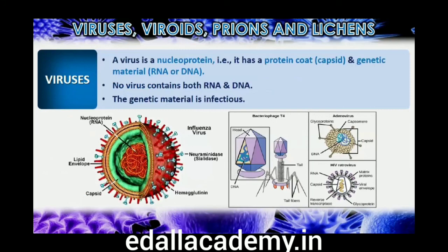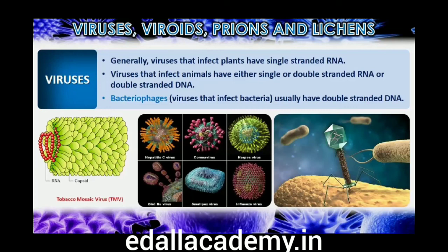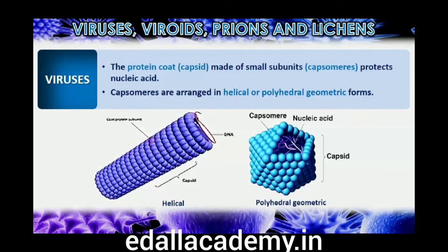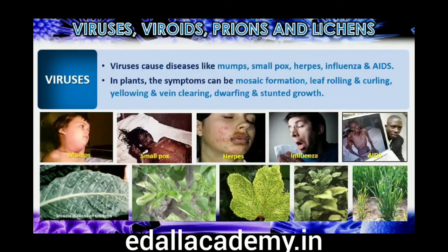In addition to proteins, viruses also contain genetic material that could be either RNA or DNA. No virus contains both RNA and DNA. A virus is a nucleoprotein and the genetic material is infectious. In general, viruses that infect plants have single-stranded RNA, and viruses that infect animals have either single- or double-stranded RNA or double-stranded DNA. Bacterial viruses or bacteriophages — viruses that infect bacteria — are usually double-stranded DNA viruses. The protein coat called capsid, made of small subunits called capsomeres, protects the nucleic acid. These capsomeres are arranged in helical or polyhedral geometric forms. Viruses cause diseases like mumps, smallpox, herpes and influenza. AIDS in humans is also caused by a virus. In plants, the symptoms can be mosaic formation, leaf-rolling and curling, yellowing and vein-clearing, dwarfing and stunted growth.